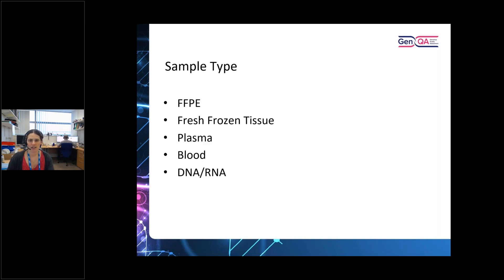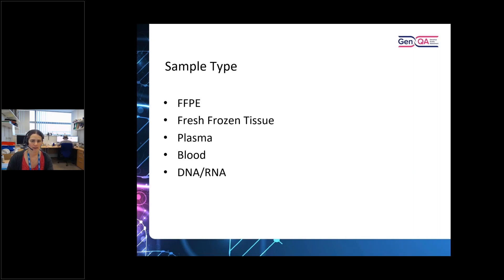Those are some of the considerations around the technology. As well as considering variabilities and how to validate a test, you need to consider what you're going to put in — this starts with looking at sample type. We need to look at whether we're looking at DNA or RNA, or potentially protein. The majority of what we do is DNA and RNA. But where is that DNA and RNA coming from and how is that going to impact your downstream processing? The main sample types we work with in genomics include formalin fixed material, fresh frozen tissue often in the form of tumours, plasma when looking for circulating material, and often whole blood.